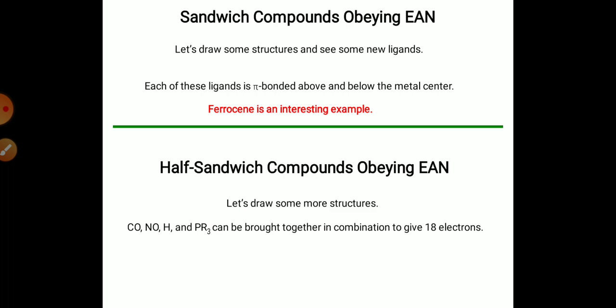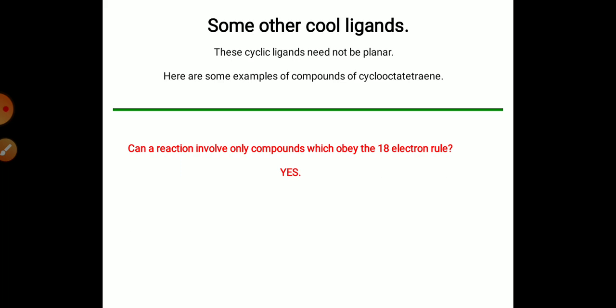The second is half-sandwich compounds, which also obey the EAN rule, with CO, NO, H, and PR3. These are the ligands which are combined together with the central metal ion and follow the 18 electron rule. Also, some other cyclic ligands follow the EAN rule.